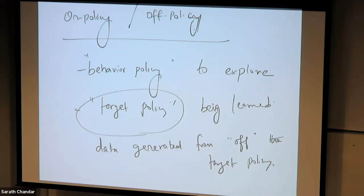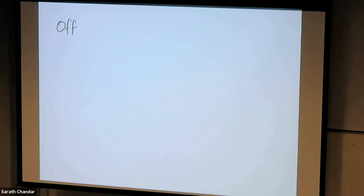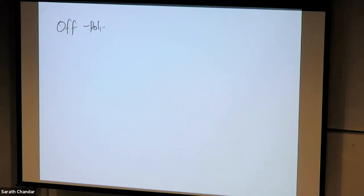Off-policy methods are much more general and, as we will see in future lectures, they are also data-efficient — they can learn with very few interactions compared to on-policy methods. Now let's see how to construct an off-policy method with Monte Carlo. We will start with prediction, where both policies are fixed.